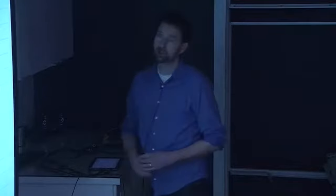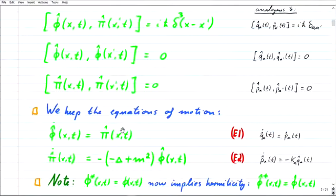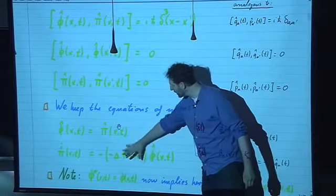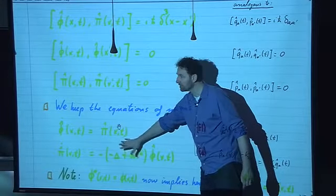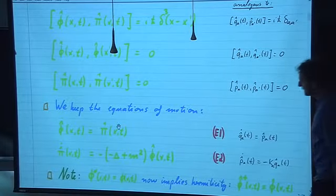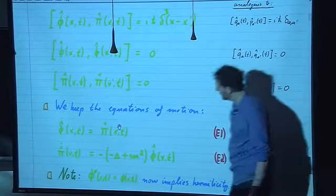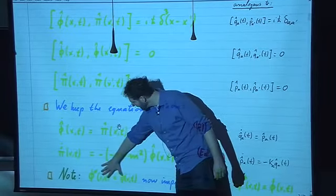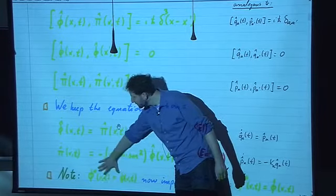You clearly see that there are terms containing not only phi of x, but also phi of x plus epsilon, where epsilon is the distance to the nearest neighbor. So what we have here is coupled harmonic oscillators. This was the second set of equations we have to solve: commutation relations being the first, equations of motion being the second — with the complication that the harmonic oscillators are coupled.